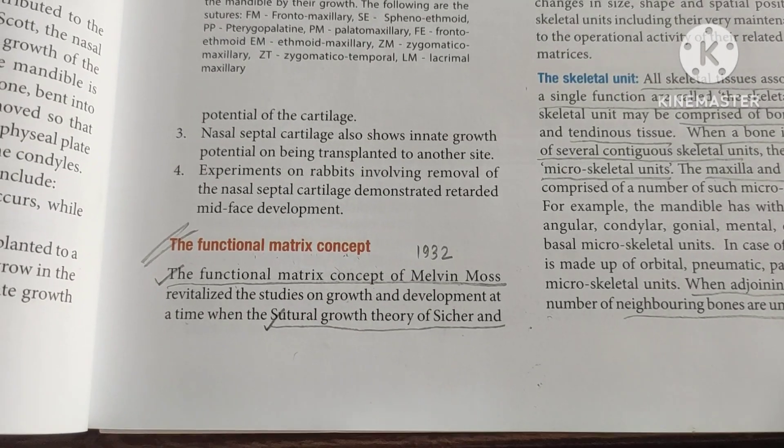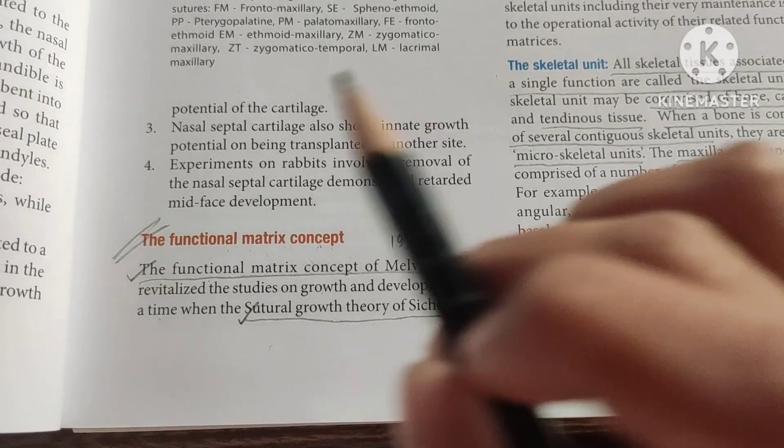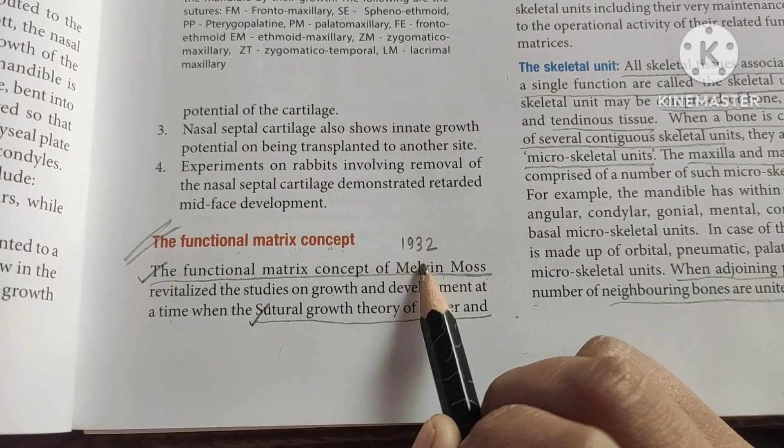Hello everyone, today we will be discussing the functional matrix theory. The functional matrix theory of Melvin Moss, given in 1962.